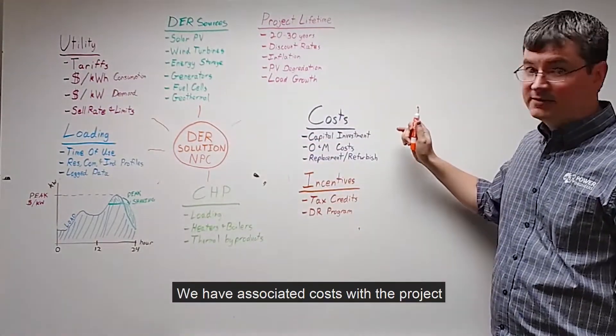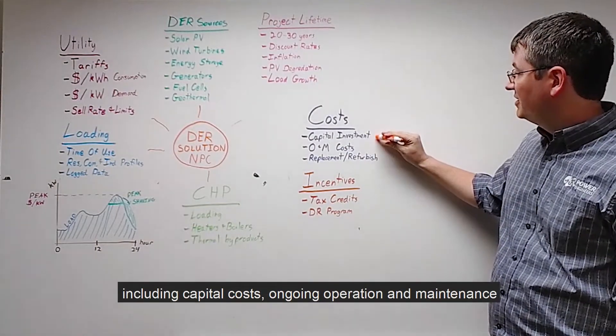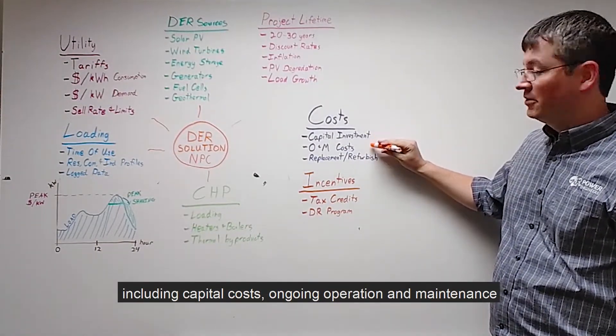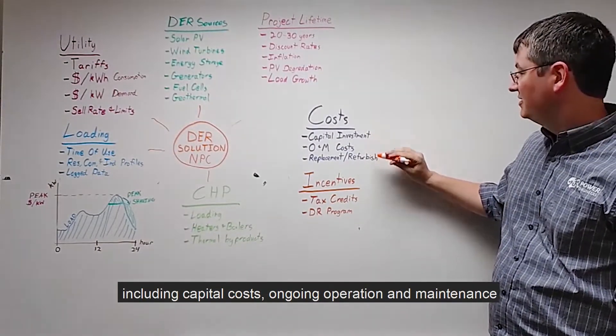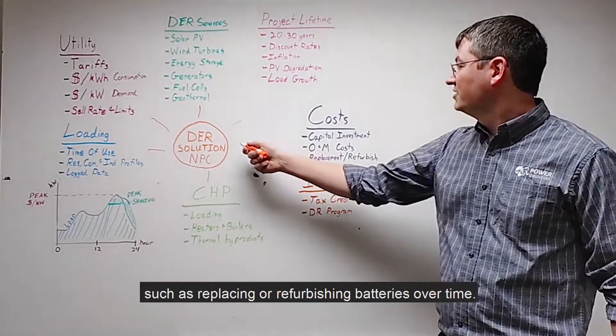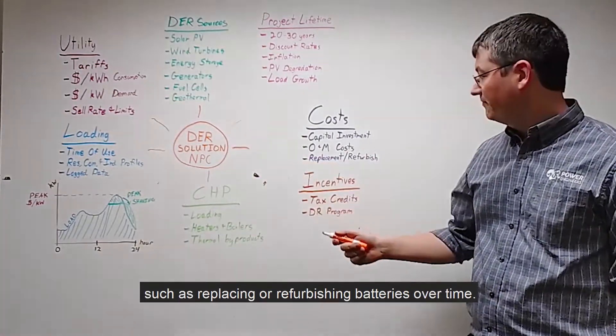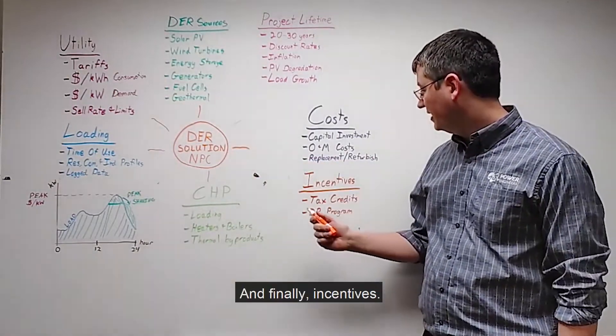We have associated costs for the project, including input capital costs, ongoing operation and maintenance, and replacement or refurbishment costs — such as replacing or refurbishing batteries over time.